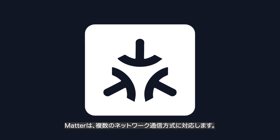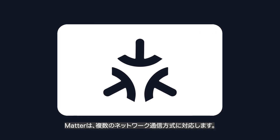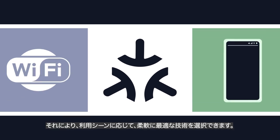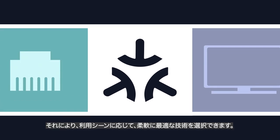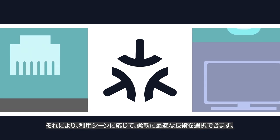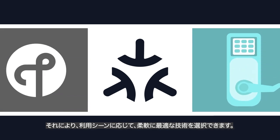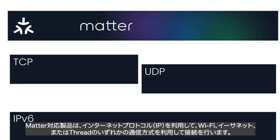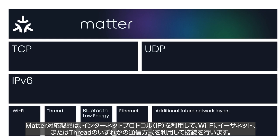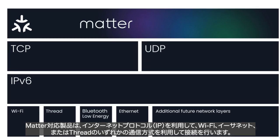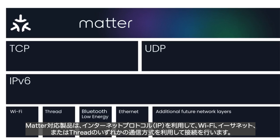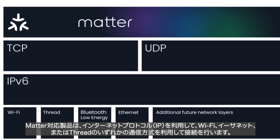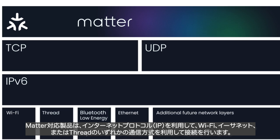Matter supports multiple network transports, giving you the flexibility to use the best technology for your use case. Matter devices can use Wi-Fi, Ethernet, or Thread for their network connection, all of which are built on Internet Protocol, or IP.